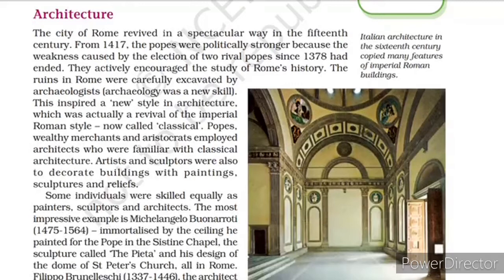Architects employed by popes, wealthy merchants, or aristocrats were already familiar with classical architecture. When they excavated, they found these structures and could immediately classify them as classical architecture. During this age, buildings were also decorated by artists and sculptors with paintings, sculptures, and reliefs — many different types of works were created. Once again, there were persons equally skilled as painters, sculptors, and architects.